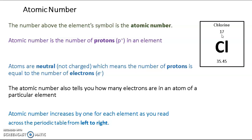Atoms are neutral, meaning that they are not charged, which means that the number of protons is equal to the number of electrons. The atomic number also tells you how many electrons are in an atom of a particular element. For example, chlorine has an atomic number of 17, which means it has 17 protons and a chlorine atom has 17 electrons.